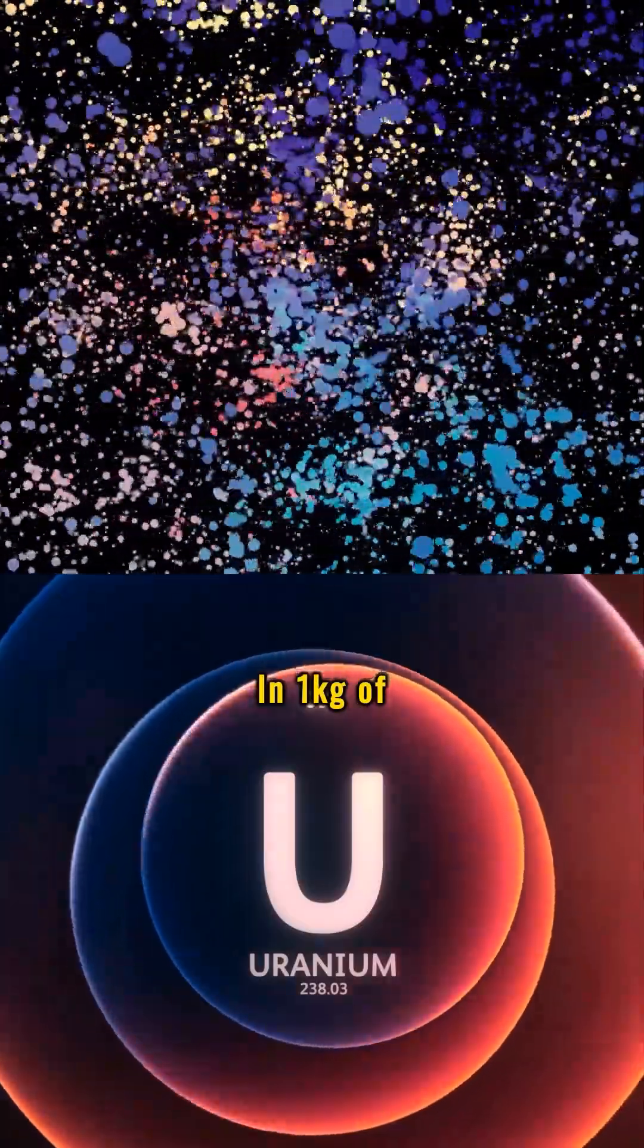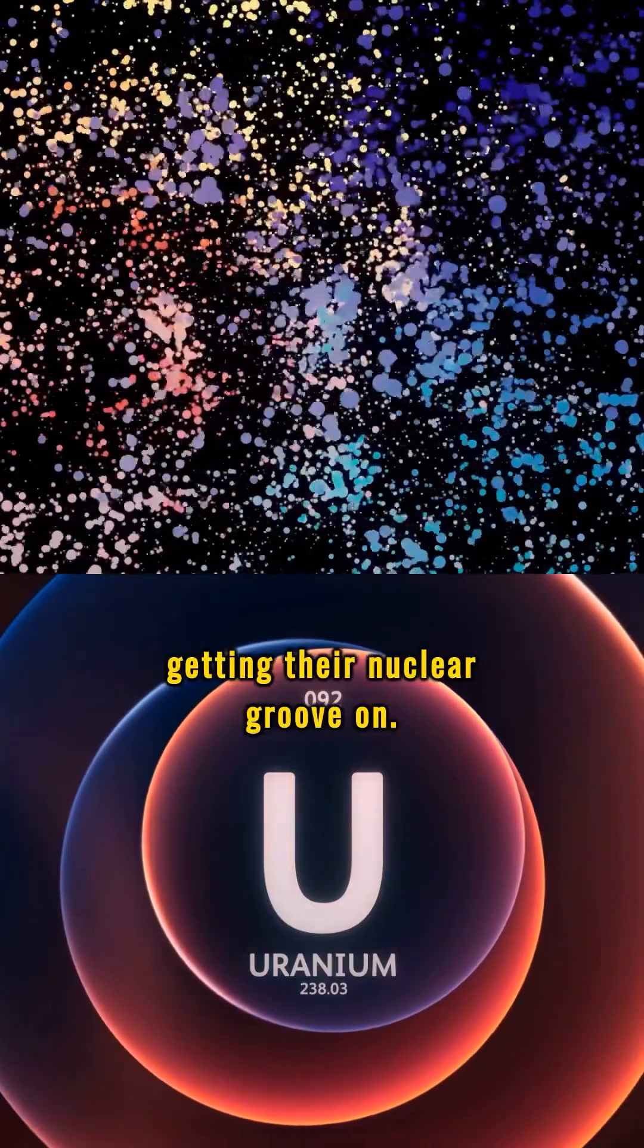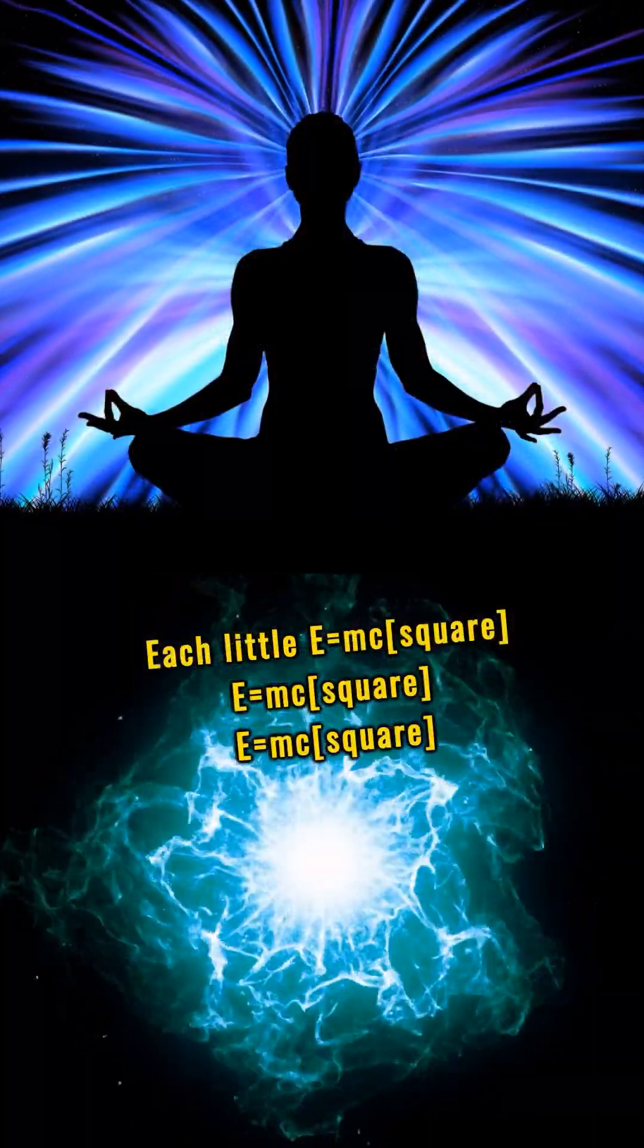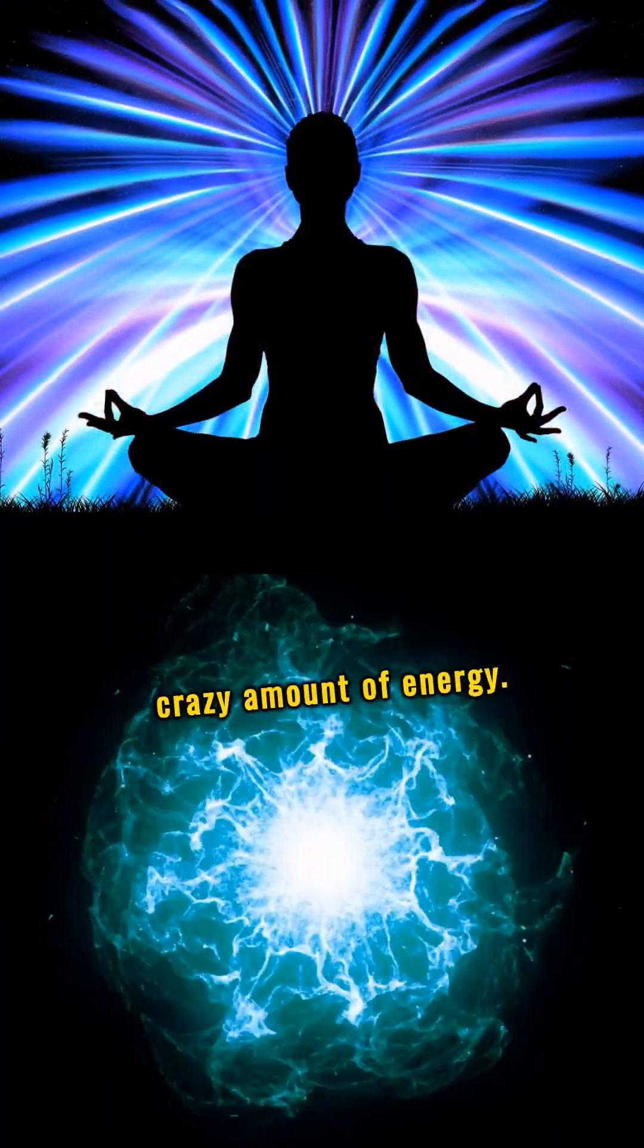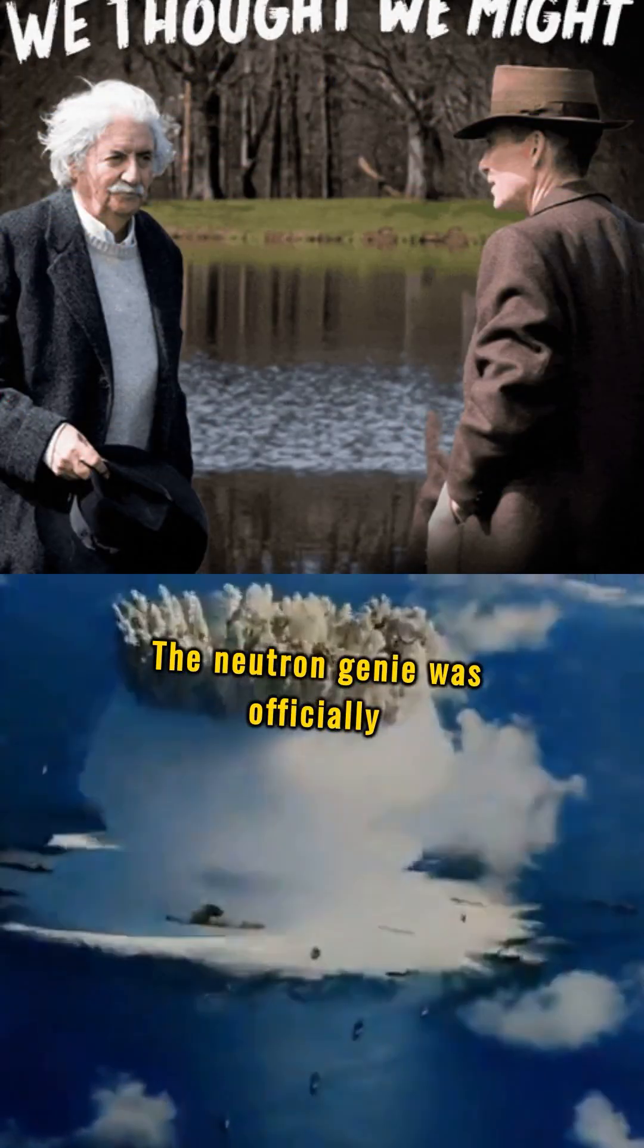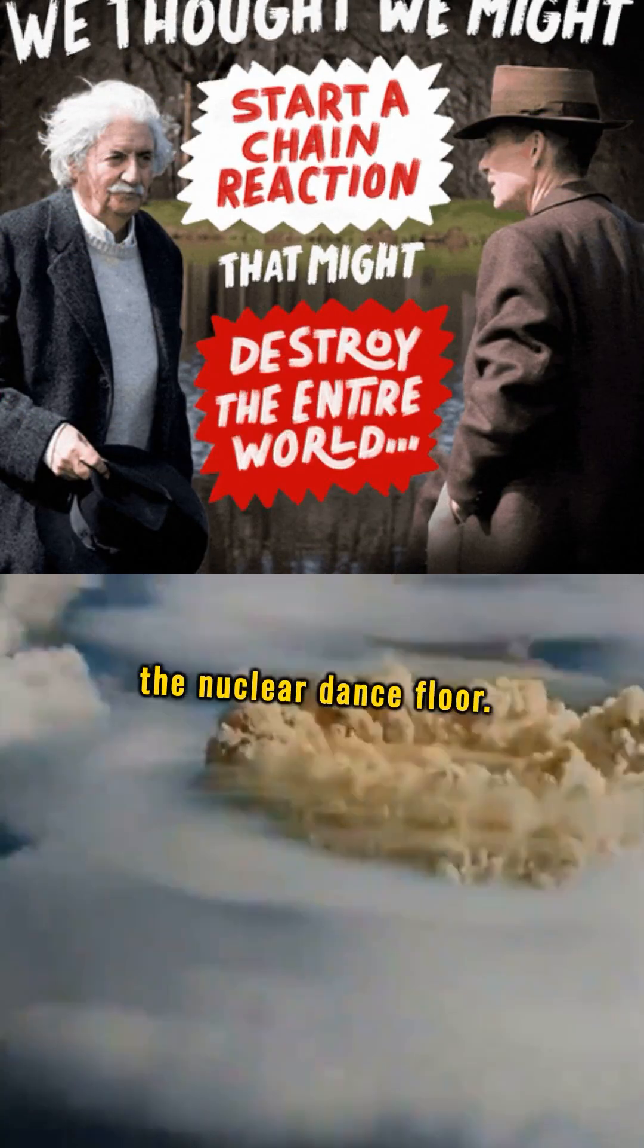In one kilogram of uranium, there's a trillion atoms getting their nuclear groove on. Each little E=mc² mass change adds up to a crazy amount of energy. The neutron genie was officially out of the bottle, and now we're stuck with the nuclear dance floor.